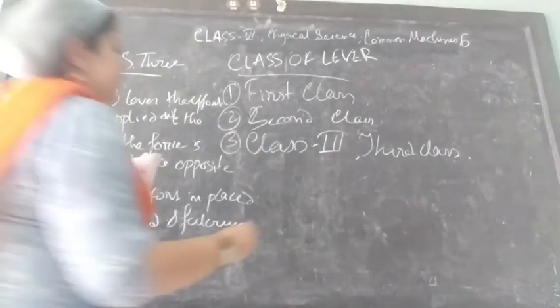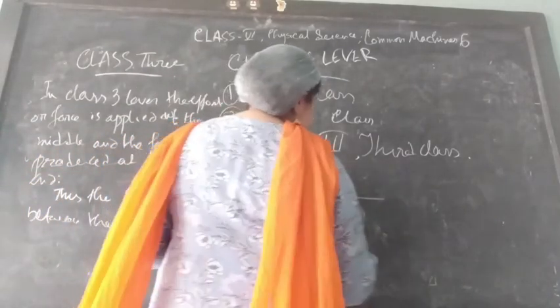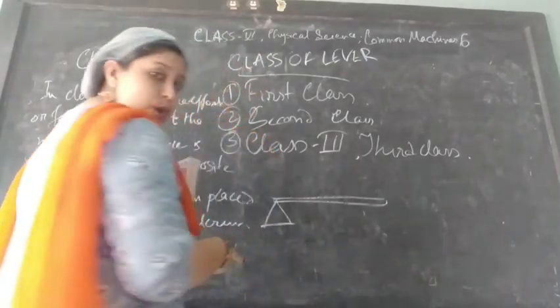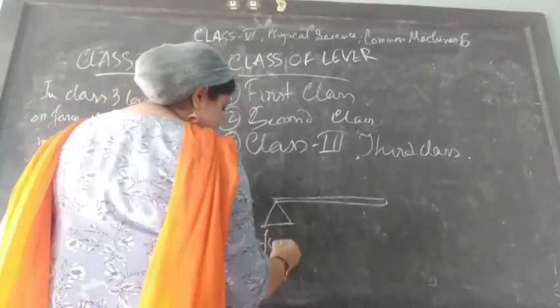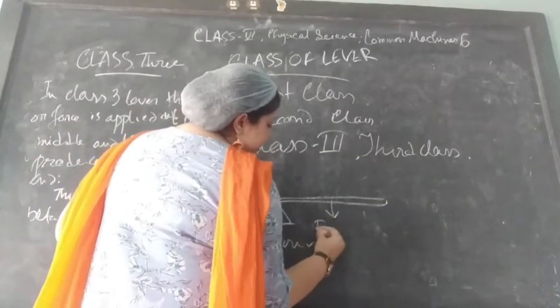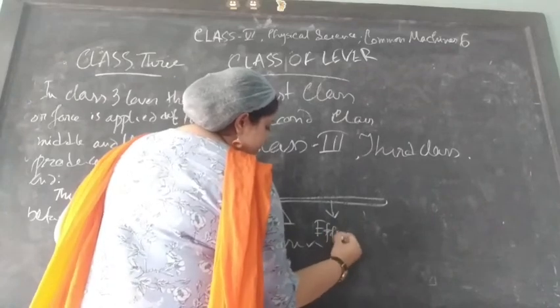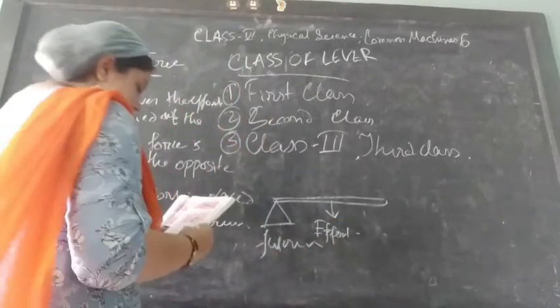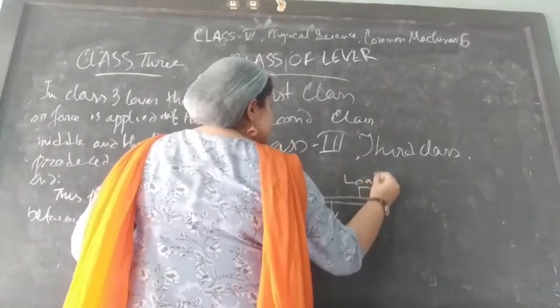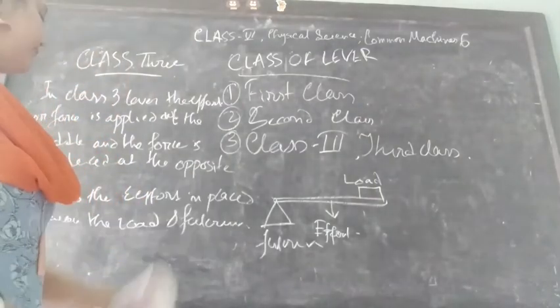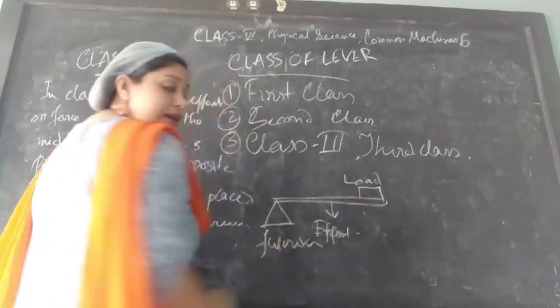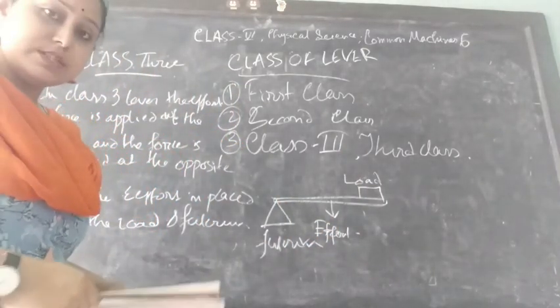Here is the diagram of it. The fulcrum is present on one side, the effort is here, and the load is on the other side. So here the effort is in between the fulcrum and load. What are the practical examples of this class three lever?